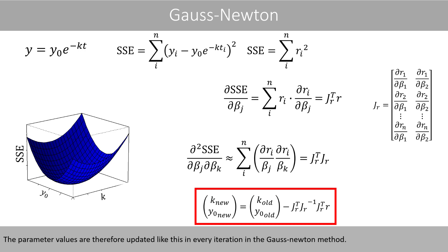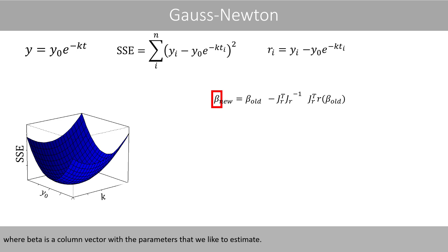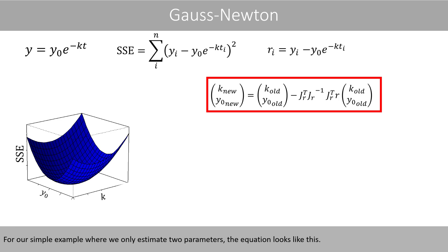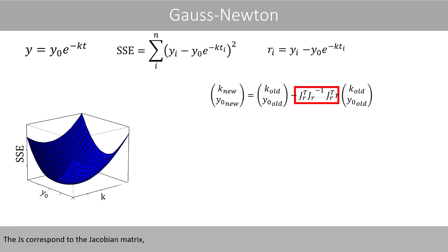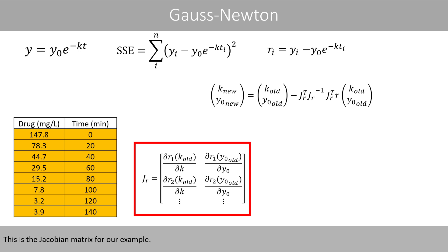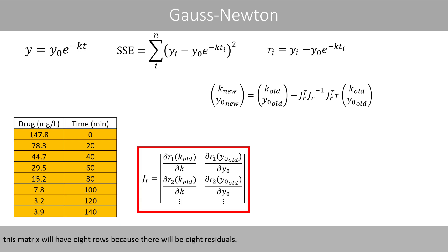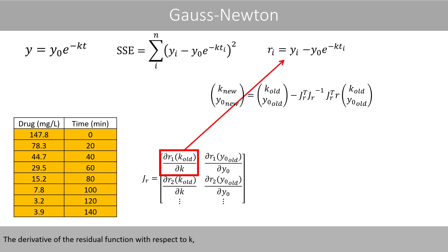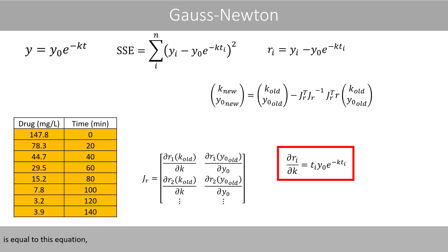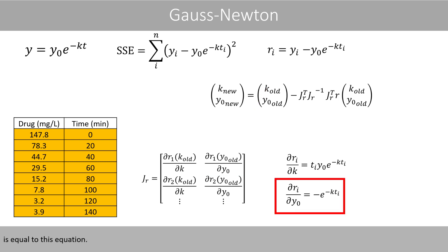The parameter values are therefore updated like this in every iteration of the Gauss-Newton method. This is the general equation for how Gauss-Newton updates the parameter values, where beta is a column vector of parameters to estimate. For our example estimating two parameters k and y0, the Jacobian matrix has eight rows. The derivative of the residual function with respect to k gives one column, and the derivative with respect to y0 gives the other.